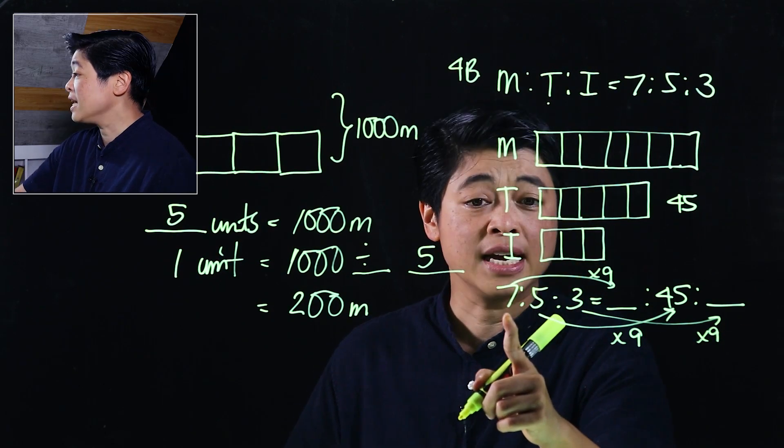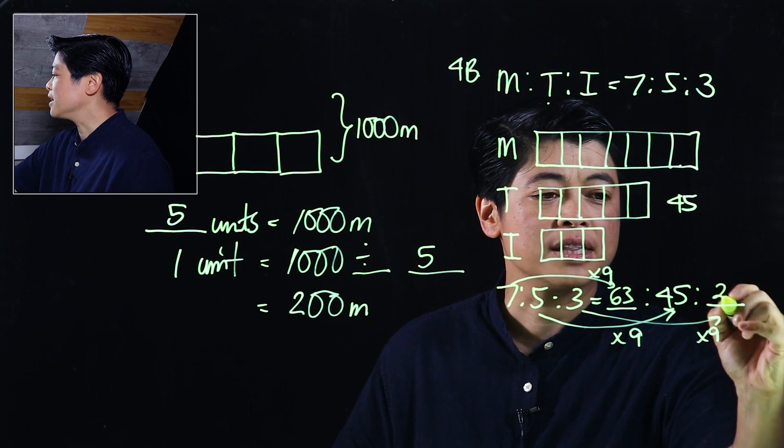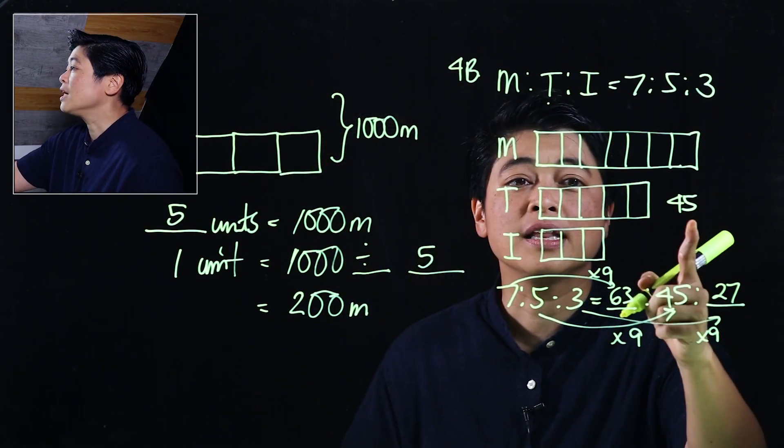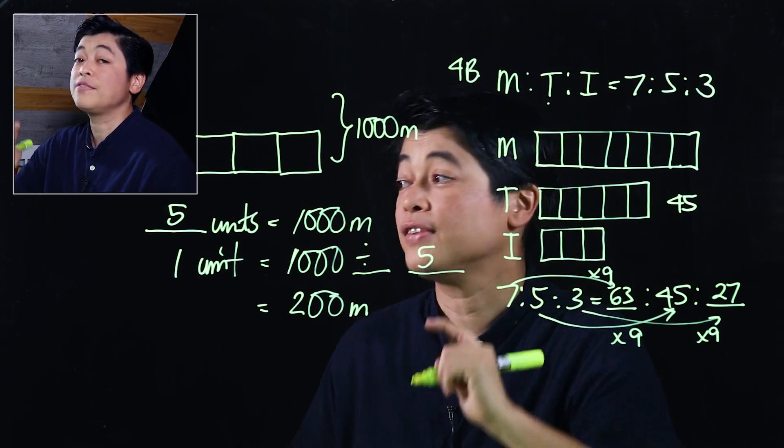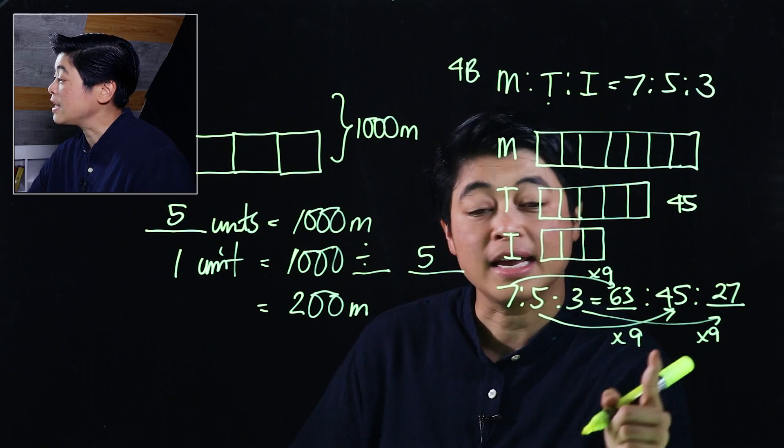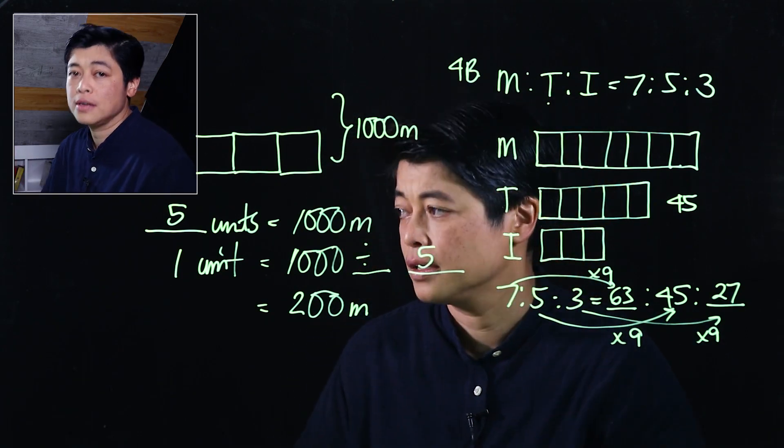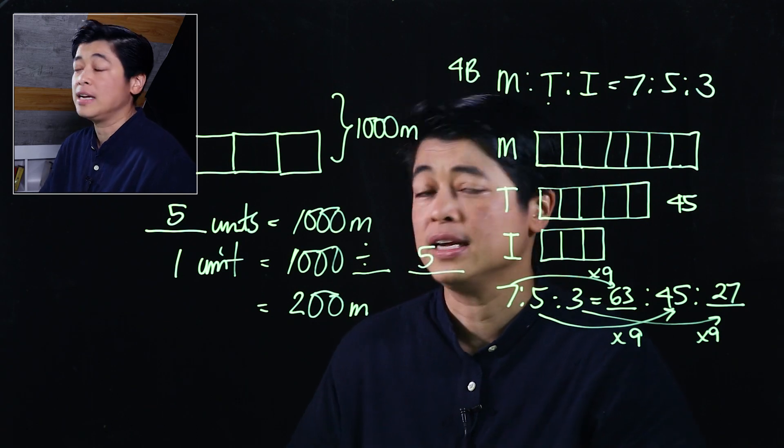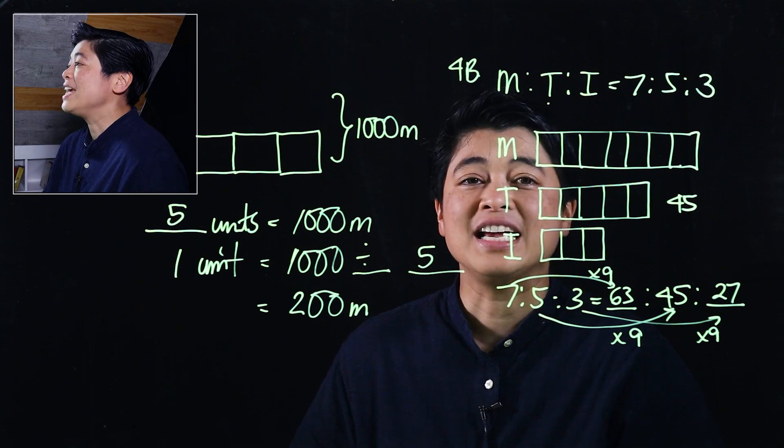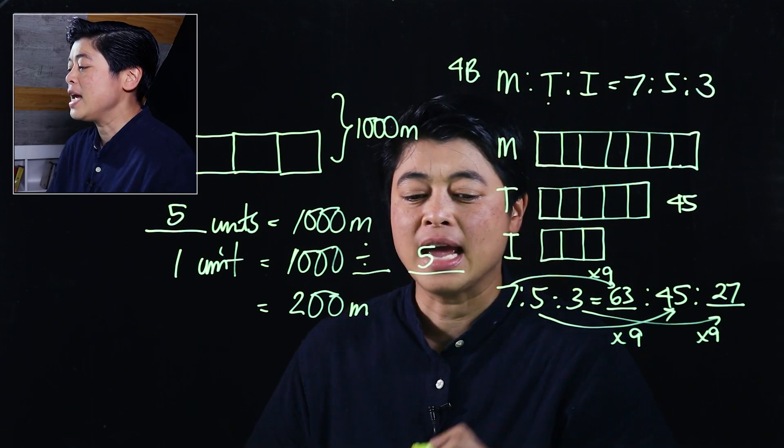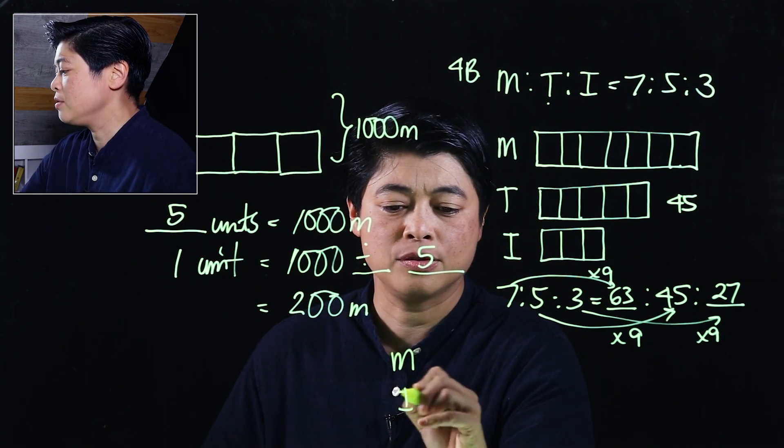So this times 9 is 63, this times 9 is 27. But with a bar model, this is saying that 45 divided by 5, which means each one is 9, so that's the times 9. Either case, whatever you want to do is fine. The question is how many more Malaysian stamps did he have than Indonesian stamps.